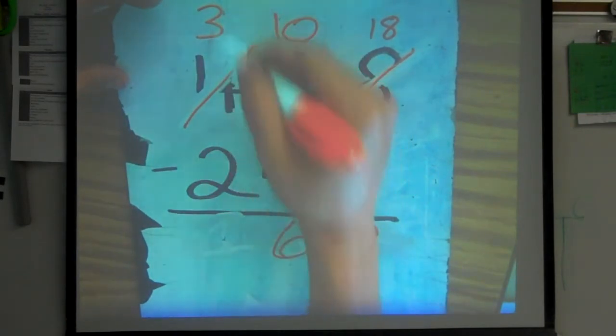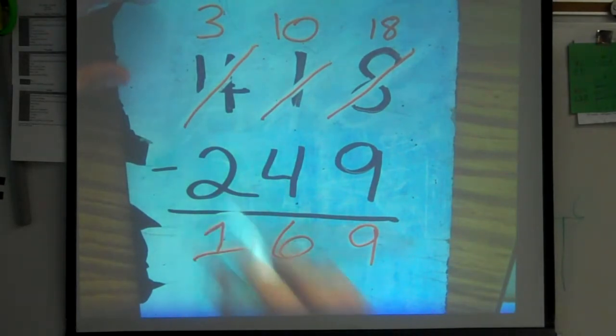3 minus 2, the big number is on top, gives me a difference of 1. So 418 minus 249 gives us a difference of 169.